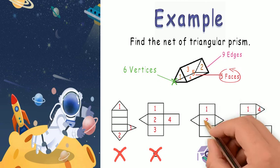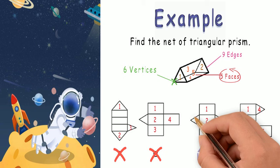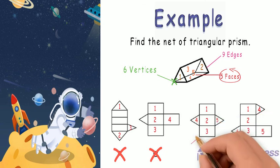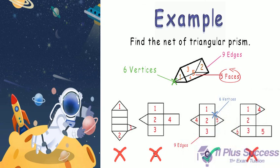Net C is our answer, as we can count 5 faces. If we fold this net, we will have 9 edges and 6 vertices.